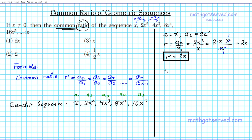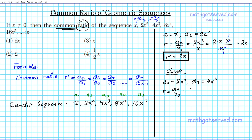Let's do a check by using two other terms. We'll use a4 and a3. Remember, we have multiple options to find the common ratio. So a4 is 8x to the fourth and a3 is 4x to the third. The common ratio R is a4 divided by a3, which gives us 8x to the fourth divided by 4x to the third.